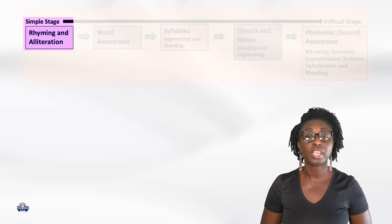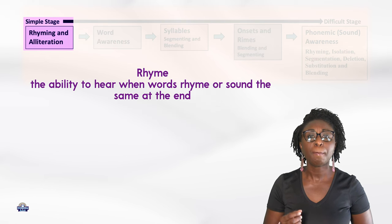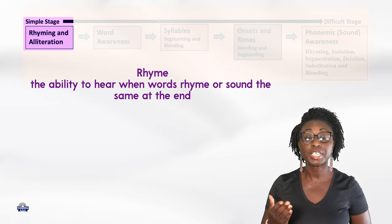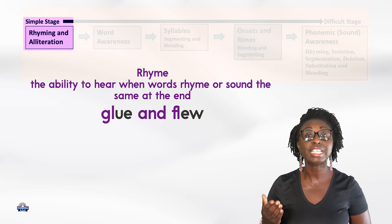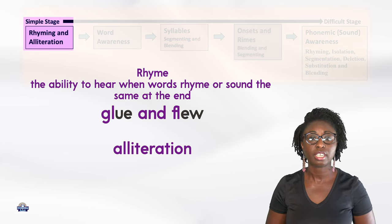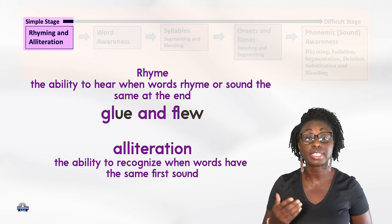Stage one: rhyme awareness and alliteration. Rhyme is the ability to hear when words rhyme or sound the same at the end — for example, 'glue' and 'flu'. Alliteration is the ability to recognize when words have the same first sound.